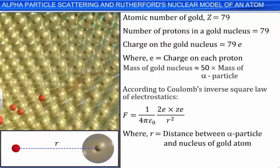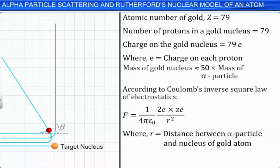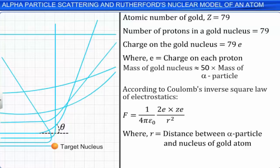The path of the alpha particle depends on the impact parameter b, which is defined as the perpendicular distance between the direction of the initial velocity of the alpha particle and the nucleus of the gold atom. The alpha particles have a range of impact parameters, so they are scattered in different directions. If the impact parameter is large, the alpha particles pass without deviation, that is, the scattering angle is approximately 0 degrees.